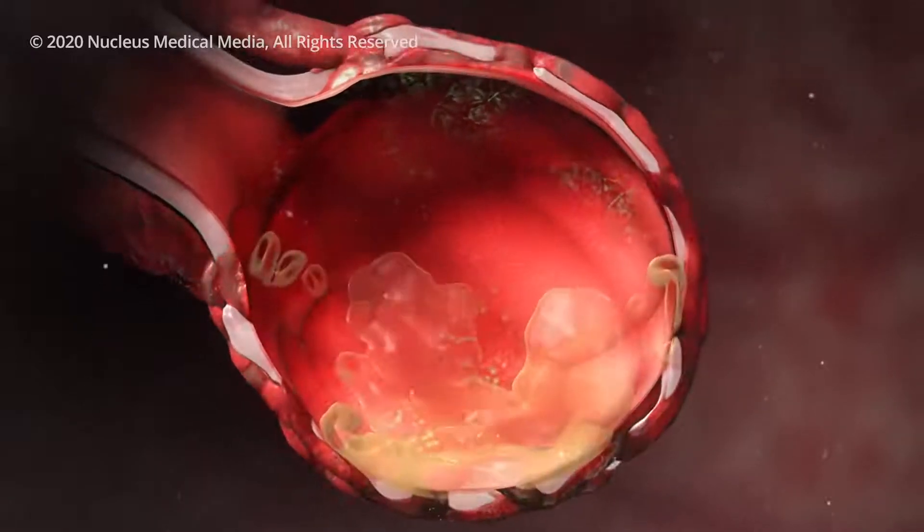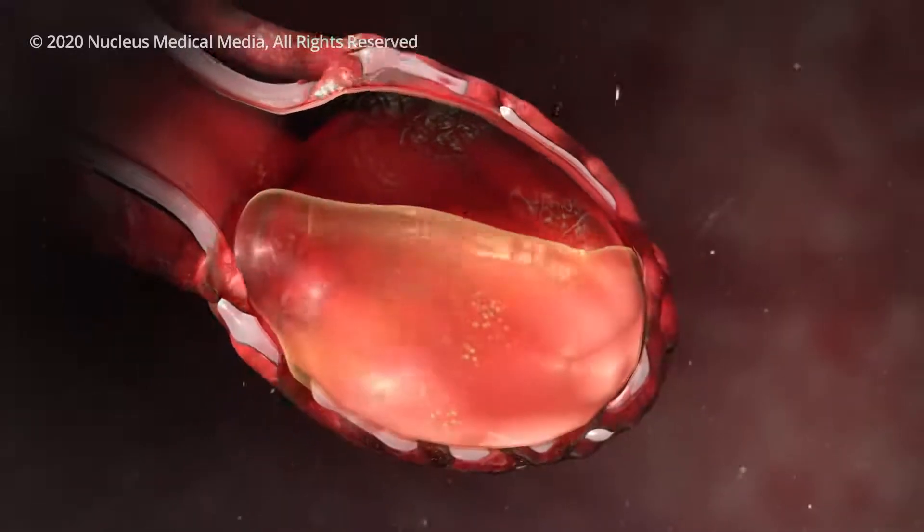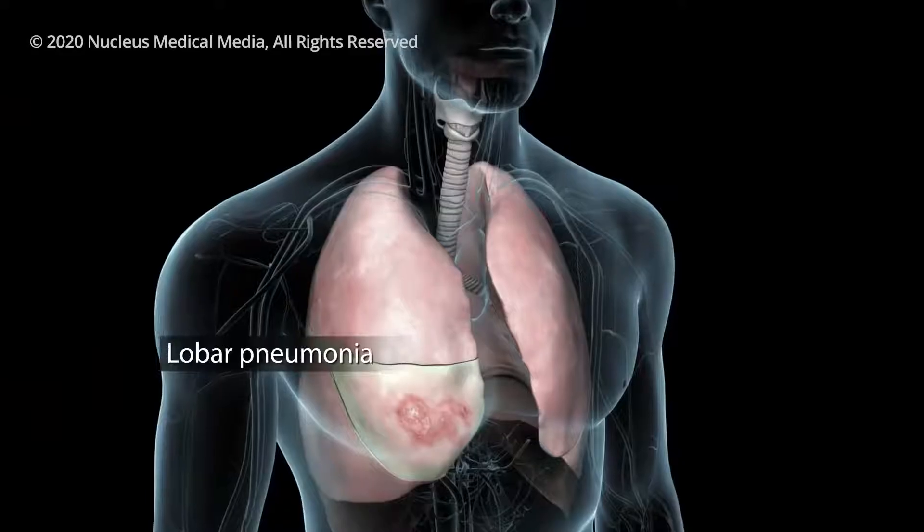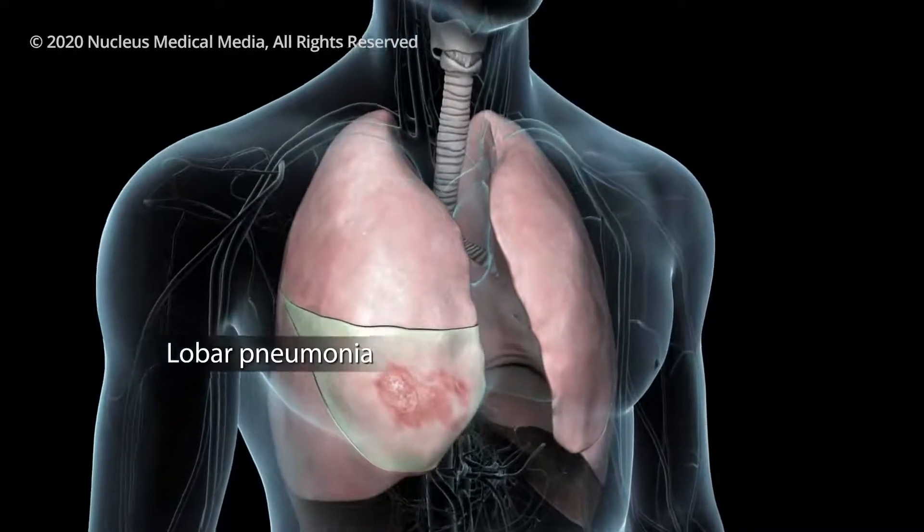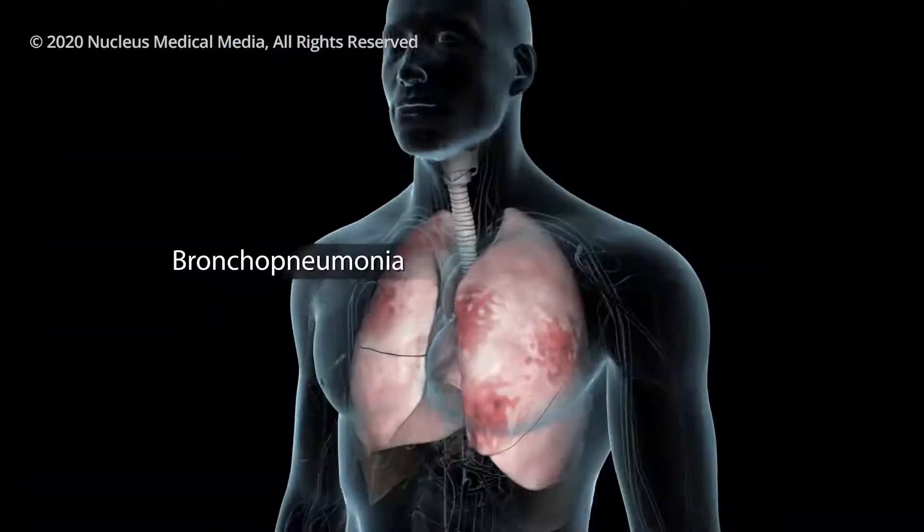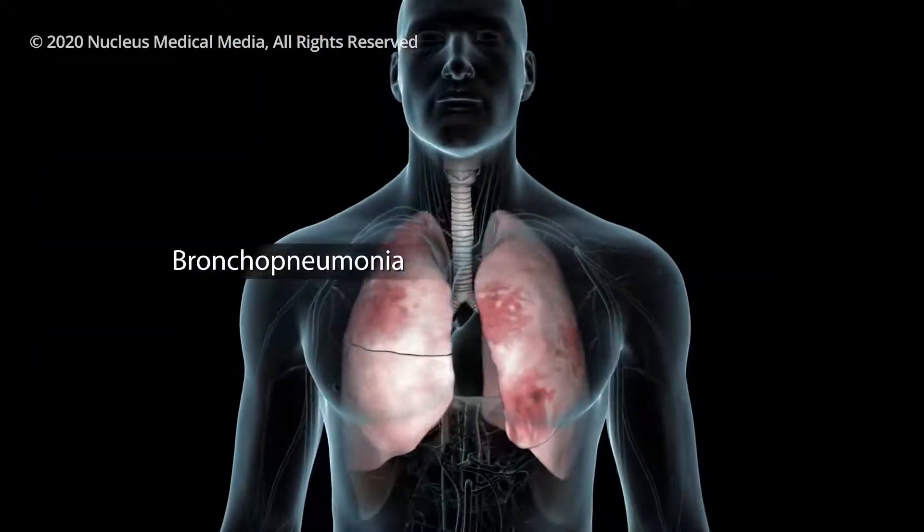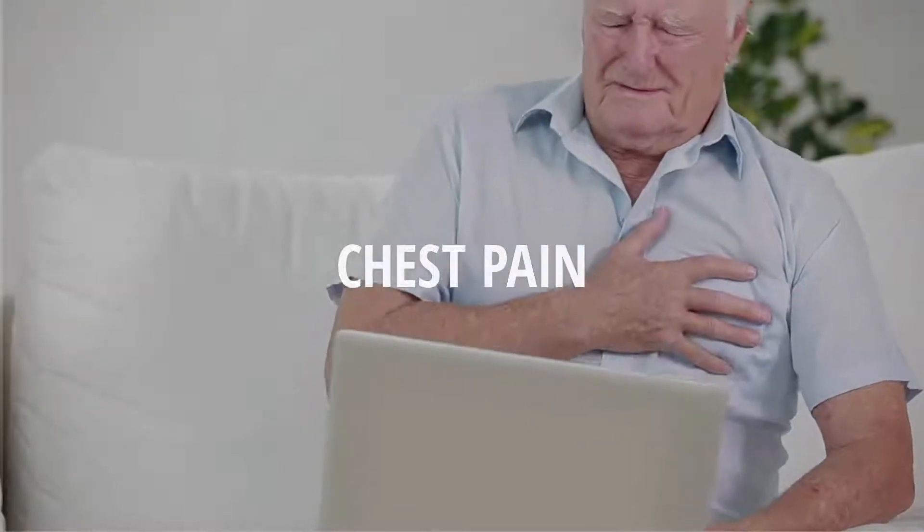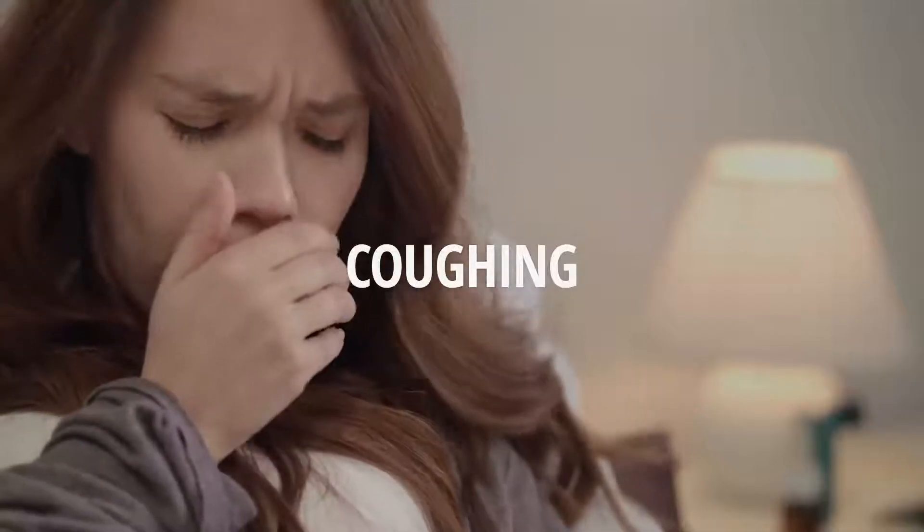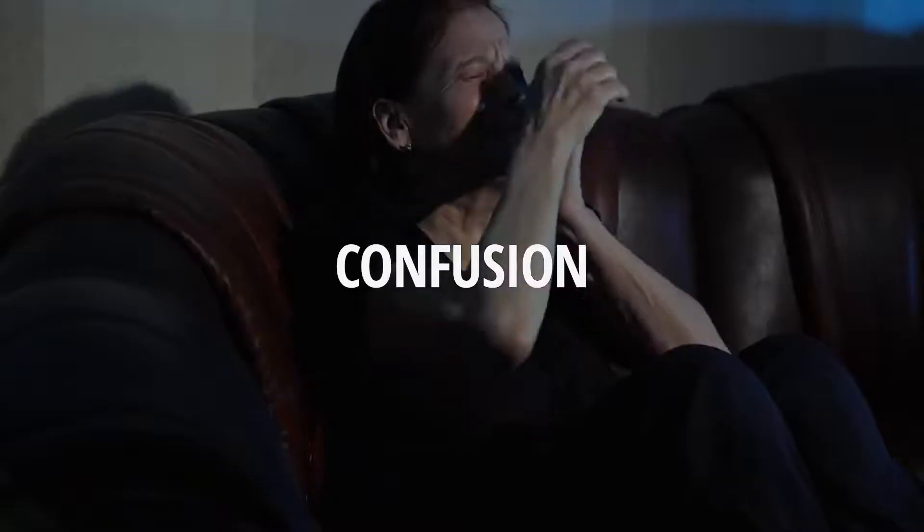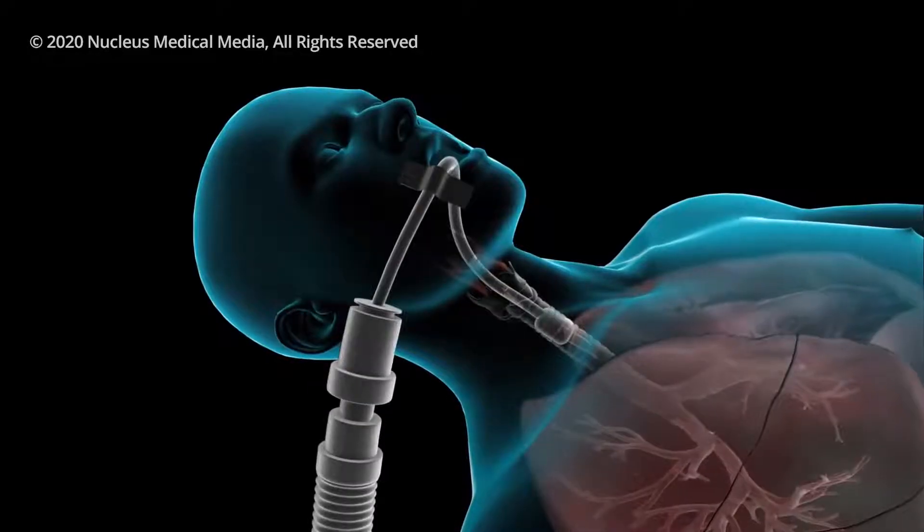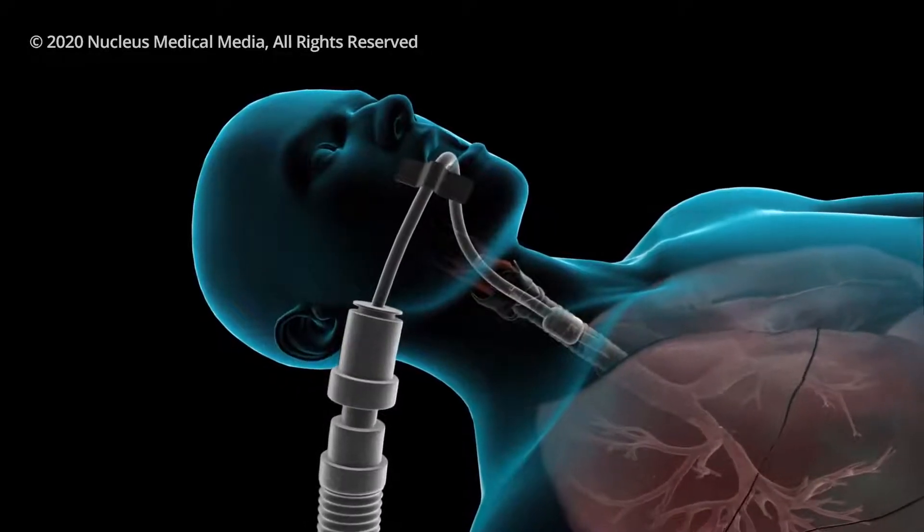The inflammation can cause your alveoli to fill with fluid, making it difficult for your body to get the oxygen it needs. You could develop lobar pneumonia, where one lobe of your lungs is affected, or you could have bronchopneumonia that affects many areas of both lungs. Pneumonia may cause difficulty breathing, chest pain, coughing, fever and chills, confusion, headache, muscle pain, and fatigue. It can also lead to more serious complications.